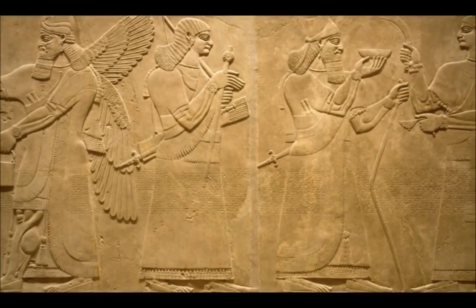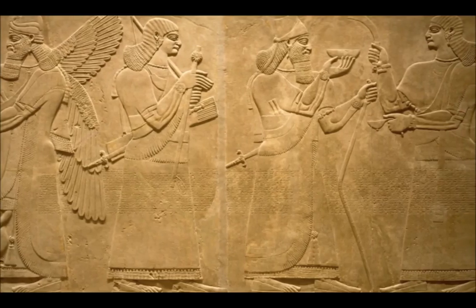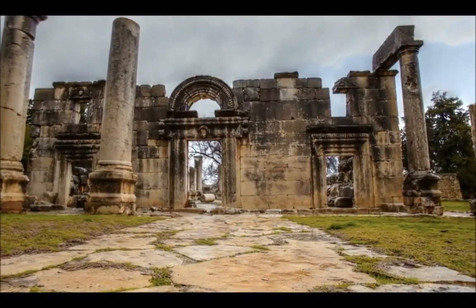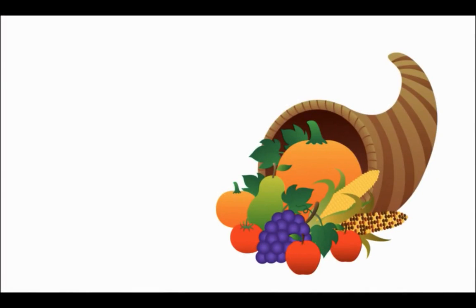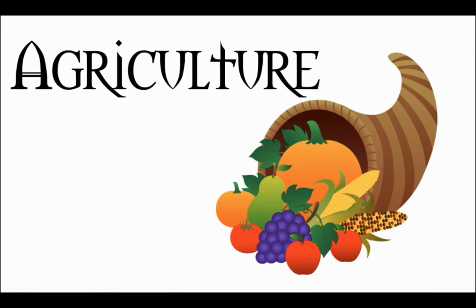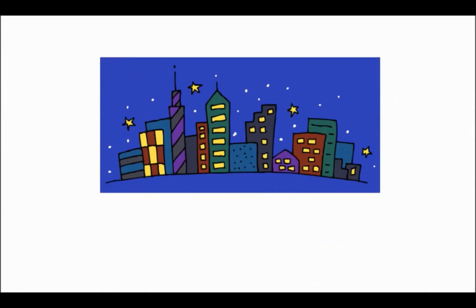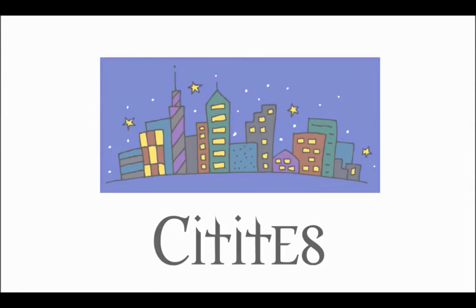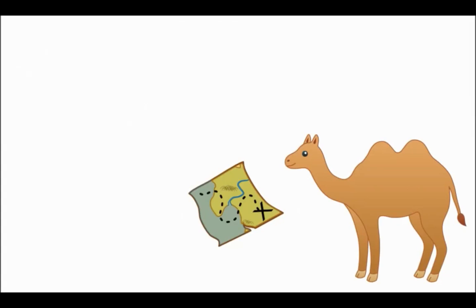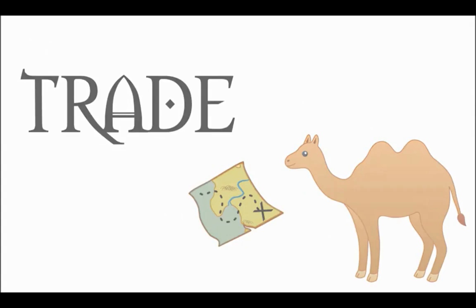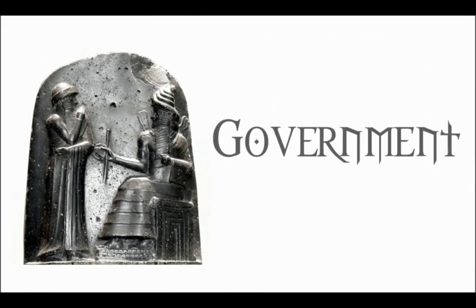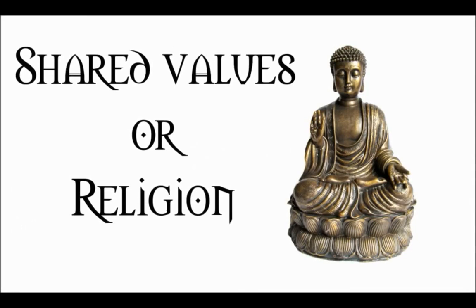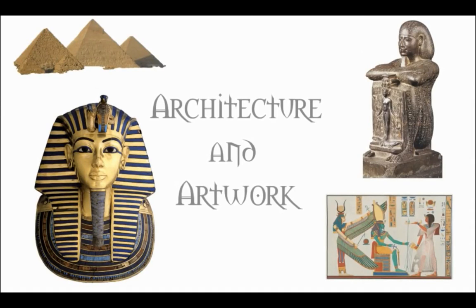People began trading with people from other cities and then with places very far away. In order to keep track of trades and their increasingly complicated lives, people began to develop writing. Several different systems of writing began as pictograms — pictures of things — and then gradually changed to represent ideas and then sounds. Through all these changes, people developed societies known as civilizations. A civilization is a culture and way of life that usually has: agriculture and extra food, large cities, specialized labor and well-developed trade, written language, strong governments, shared values and often a shared religion, and their own style of architecture and artwork.